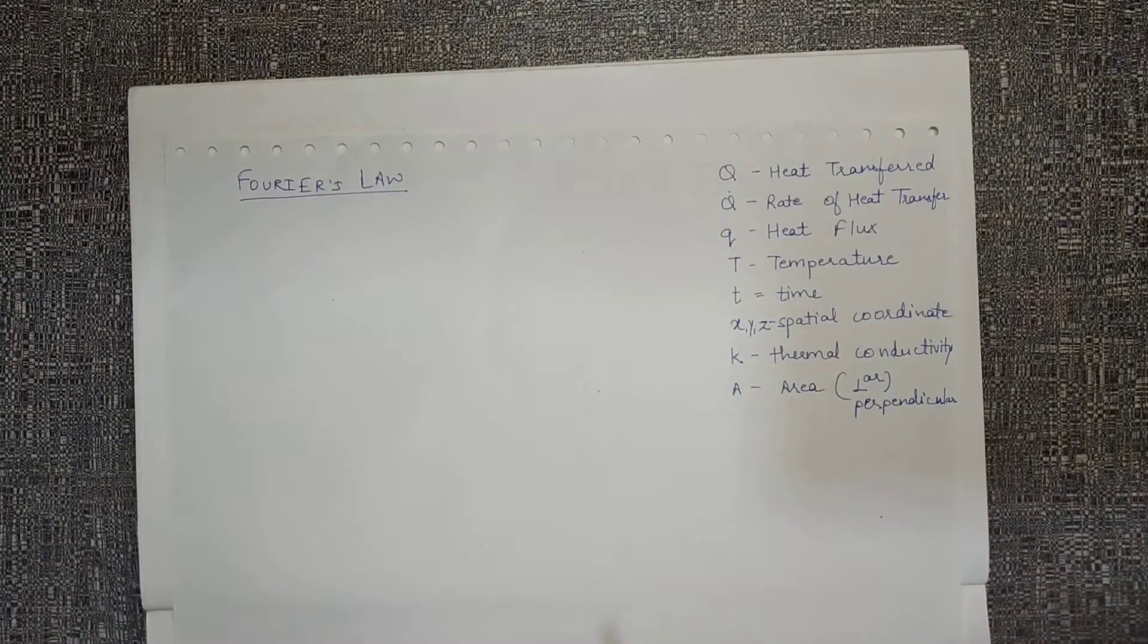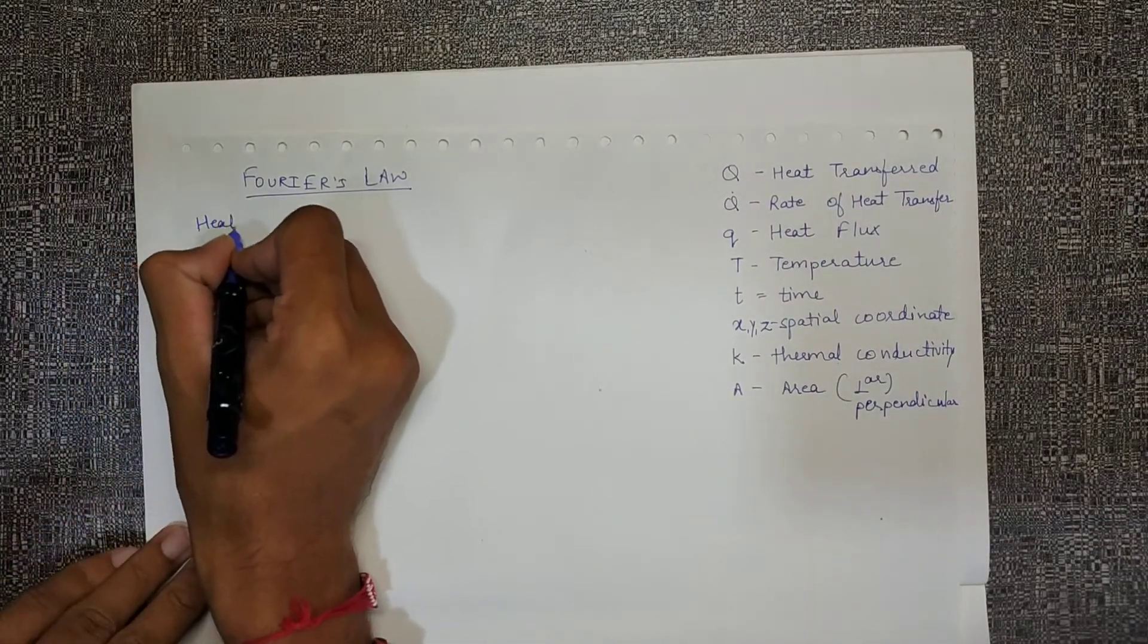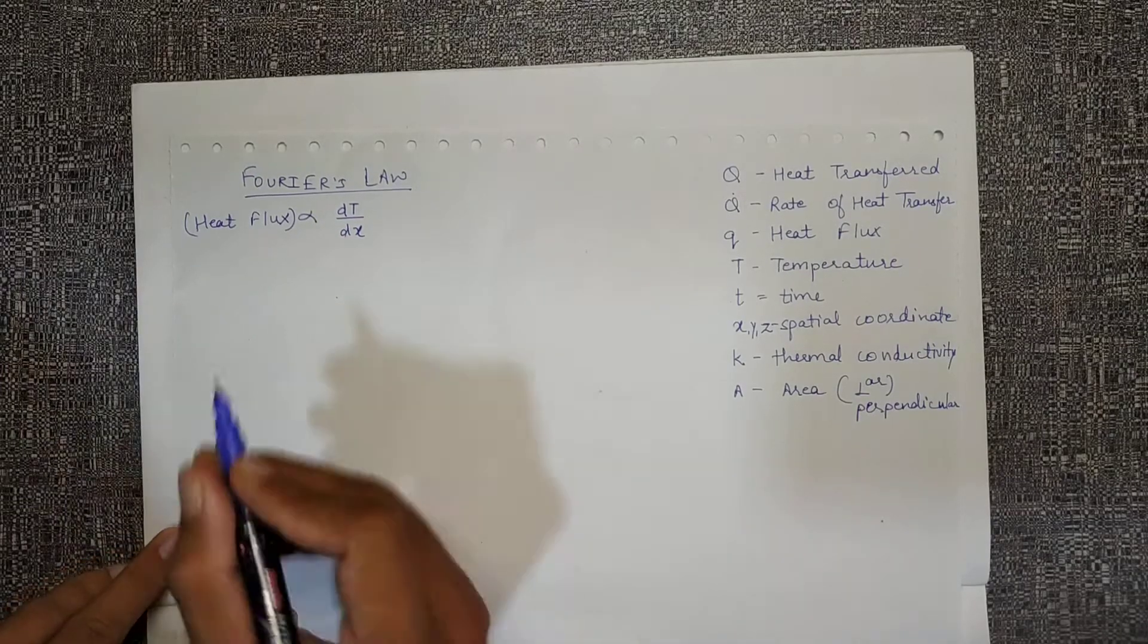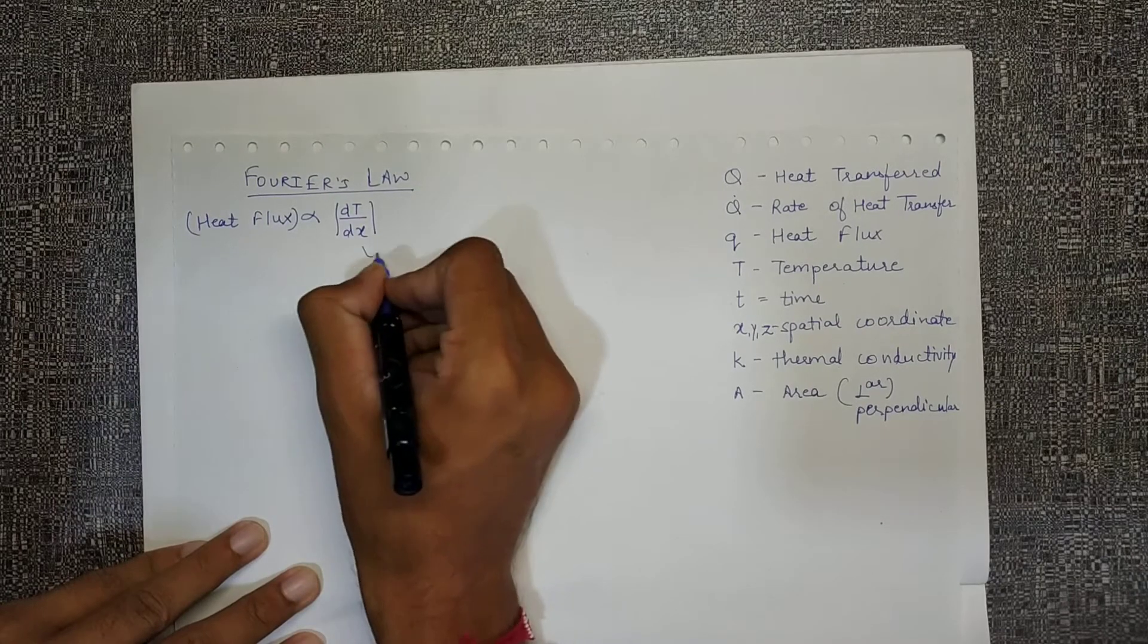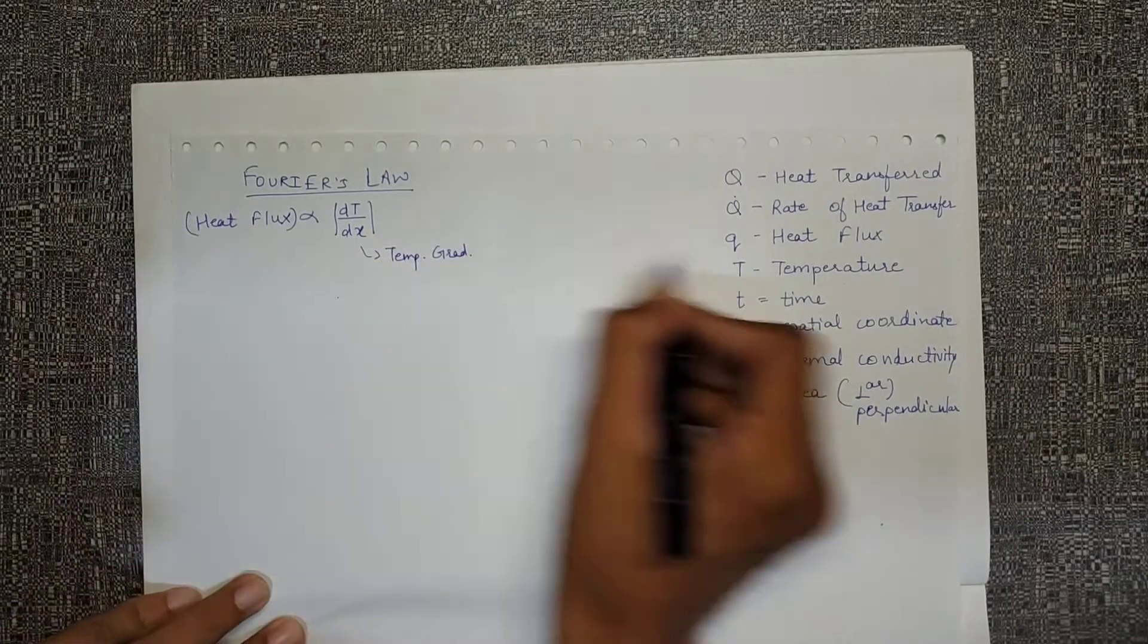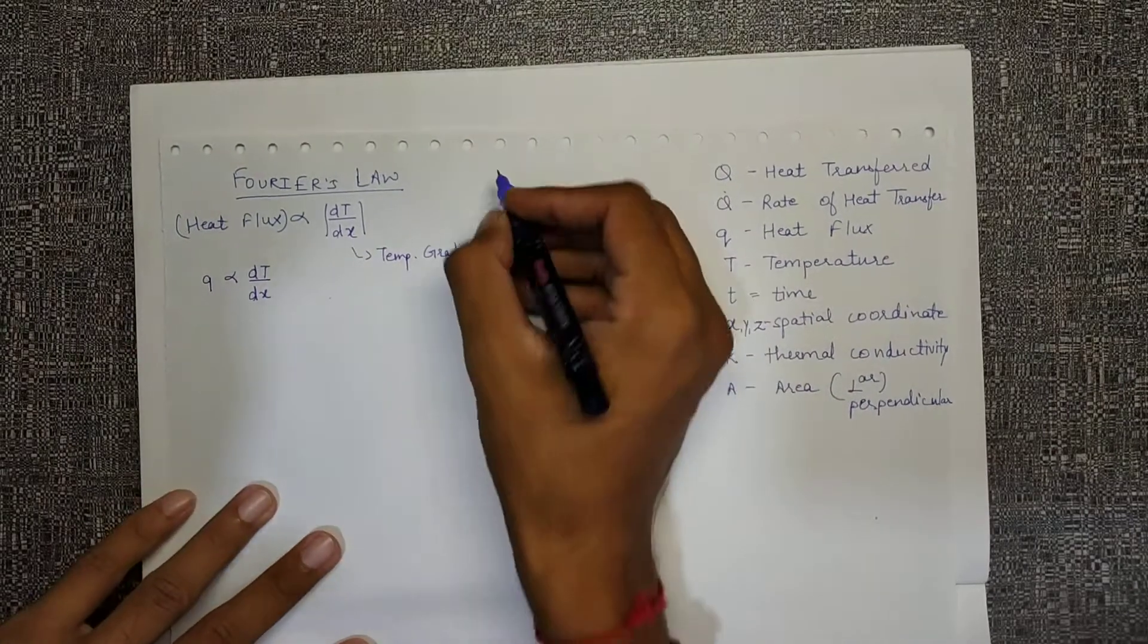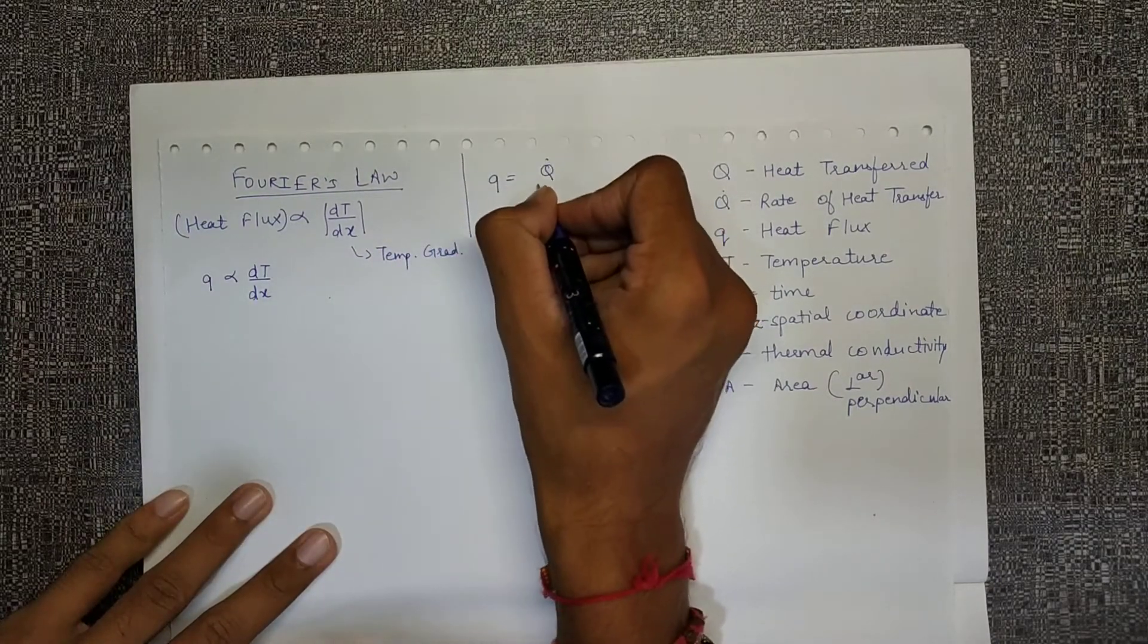So let's go to Fourier's law. What it says is that heat flux is directly proportional to temperature gradient. So dt by dx was temperature gradient. Now heat flux is symbolized as small q and it is dt by dx. That small q is the total amount of rate of heat transfer upon the area.